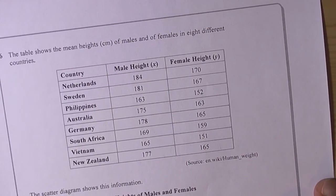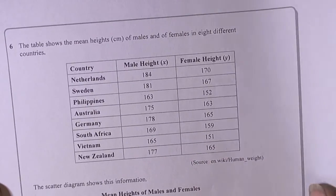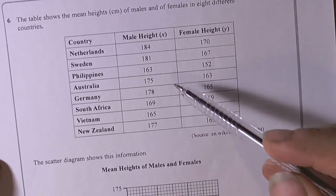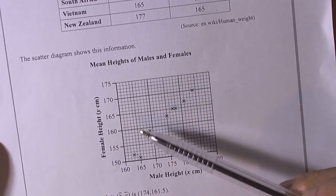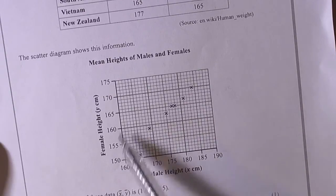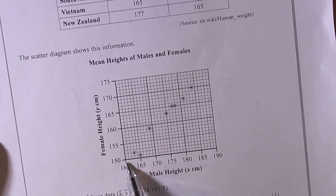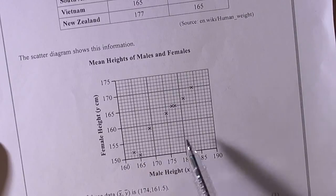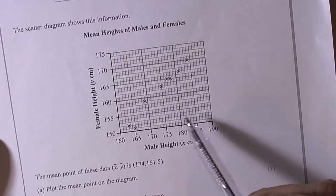Here we have a question about scatter graphs and their interpretation. We've got data about heights of males and females already plotted for us. First thing to do is check the scale and make sure we understand what each little square is worth. Going along the bottom, there's five little squares for each five centimetres, so each little square is worth one. The same on the side - the scale is one centimetre for every little square.